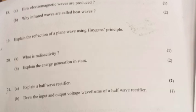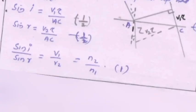Question 19: Explain the refraction of a plane wave using Huygens' principle. Sin i equals V₁T by AC. Sin r equals V₂T by AC. Sin i by sin r equals V₁ by V₂ equals n₂ by n₁.